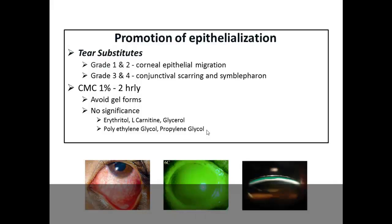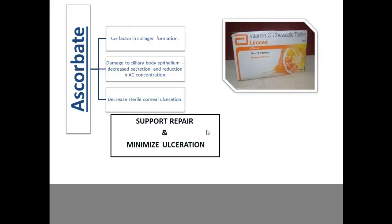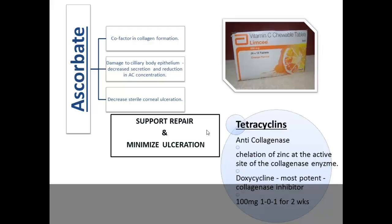For stromal support, vitamin C in the form of ascorbate is given as chewable tablets — two tablets three times a day, totaling around 3g per day. It acts as a cofactor in collagen formation, and damage to the ciliary body epithelium has already decreased ascorbate in the aqueous humor, so supplementation helps decrease the formation of sterile corneal ulceration. Doxycycline has an anti-collagenase effect, inhibiting collagenases by chelation of zinc. The preferred tetracycline is doxycycline 100mg twice a day for two weeks.